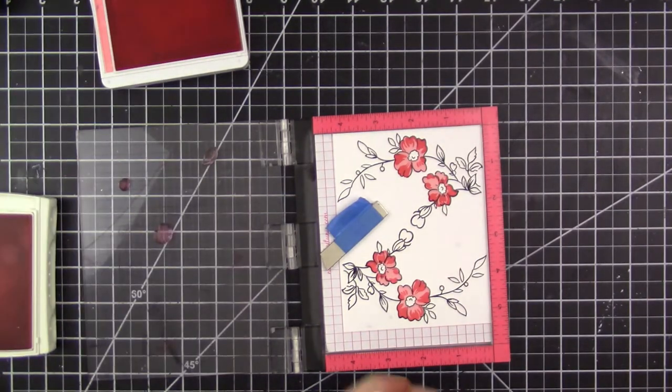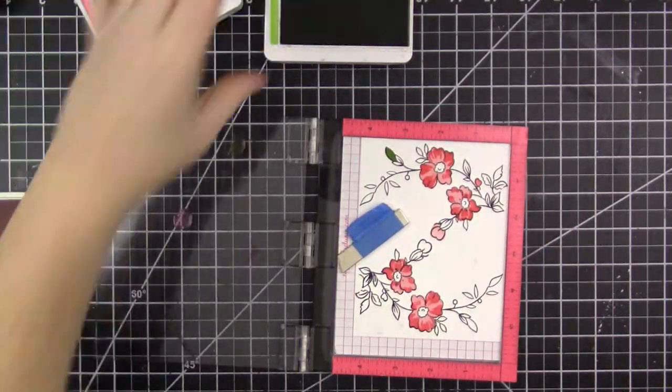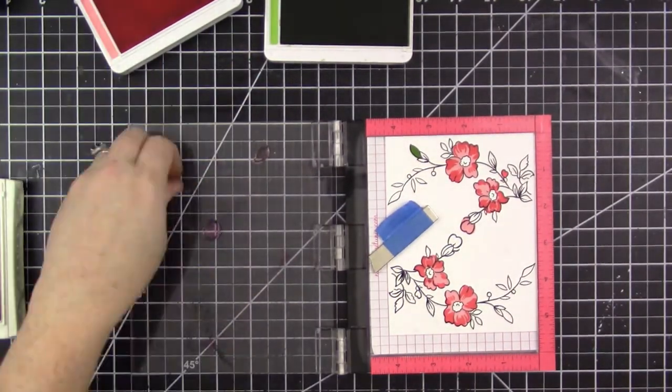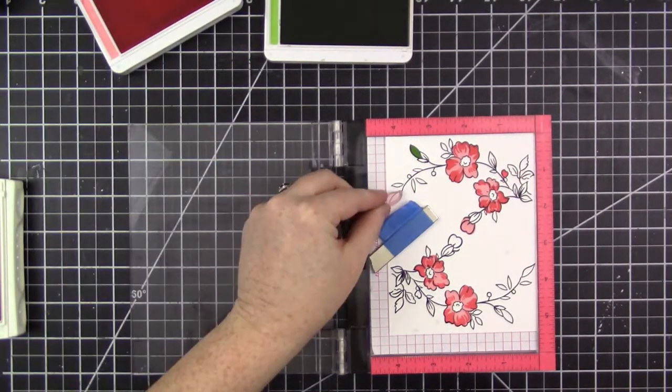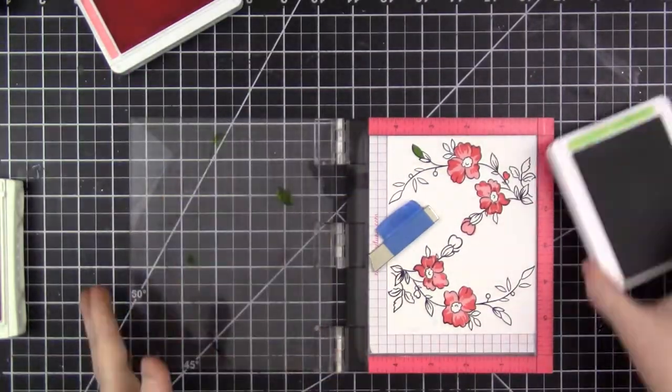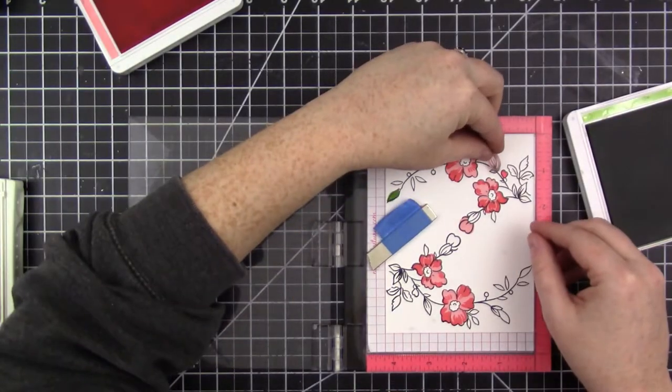A stamp set like this really lends itself very well to offset stamping, which is a technique in which layered images are purposely designed not to be lined up right on top of one another. So there's no worry about the images being a little off because this is an intentional technique that is just as beautiful.